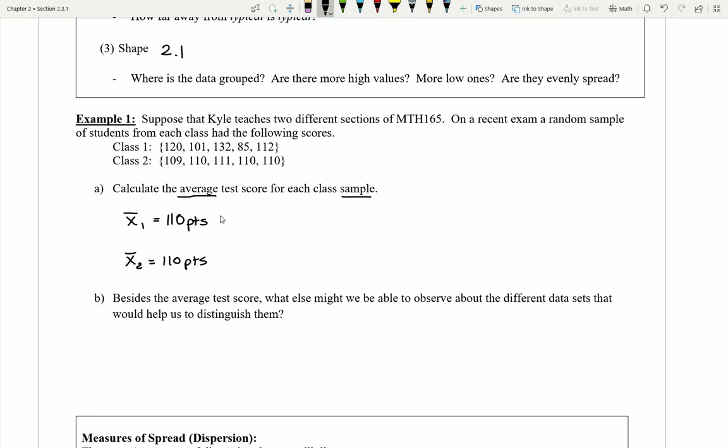So besides the average test score, what else might we be able to observe about the different data sets that would help us to distinguish them? Because obviously just stating what's a typical score may not be fully descriptive. There's probably some other things I can do.